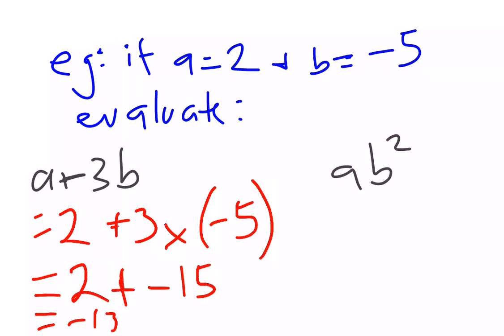We can evaluate the expression ab squared. Substitute in the values that we know. a is 2. ab means a times b. This will be 2 times b squared. b is negative 5, and we're squaring it. negative 5 squared is 25. Remembering that's positive. negative 5 times negative 5, 25, times 2, 50. We've substituted in the values to evaluate the expression.